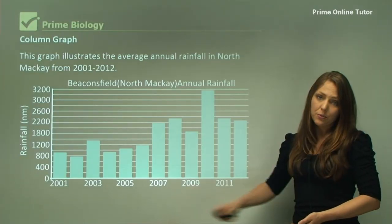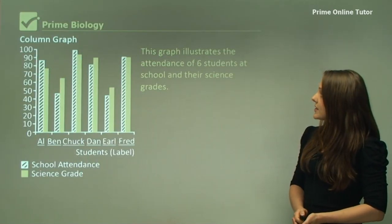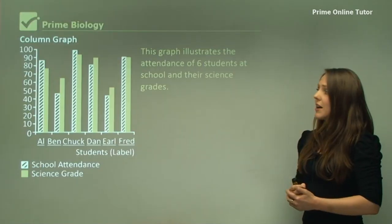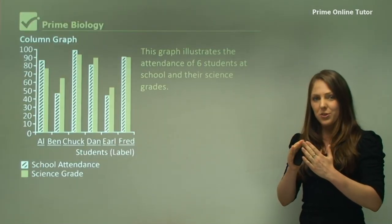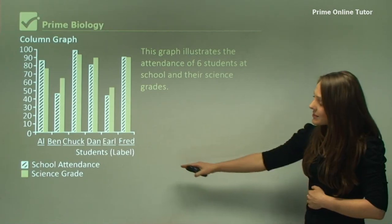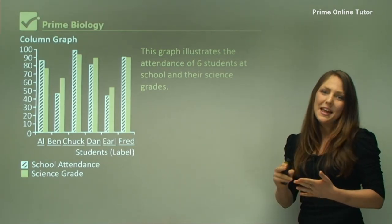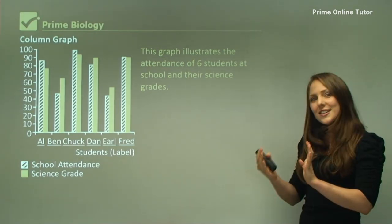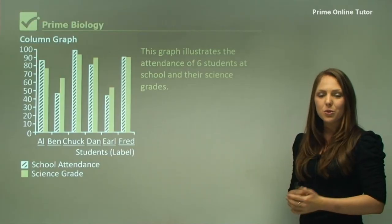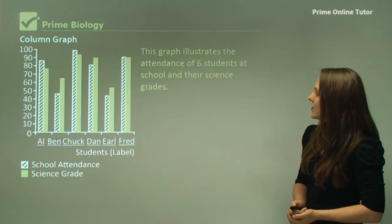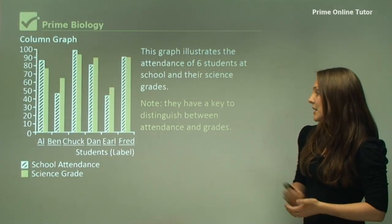Going back to this graph, it shows two different data sets and there's a key down the bottom with school attendance and grades. They're trying to see if there's a correlation between school attendance and grades. They have a key to distinguish between attendance and grades as well.